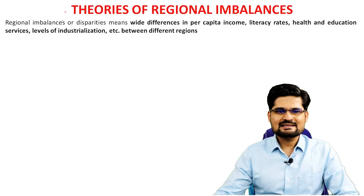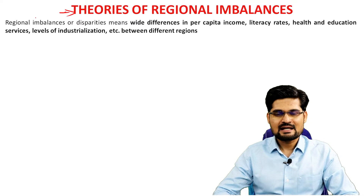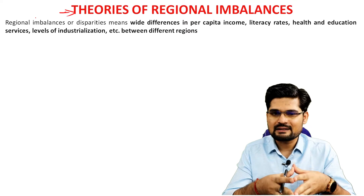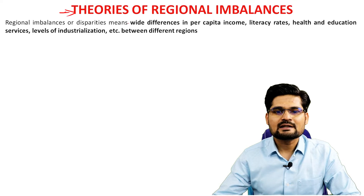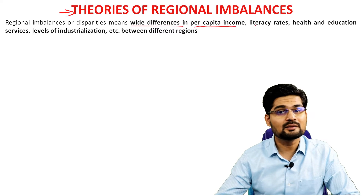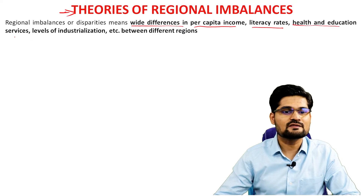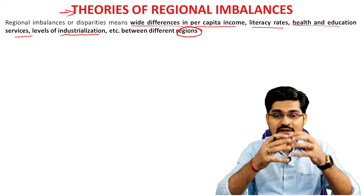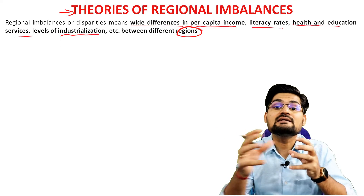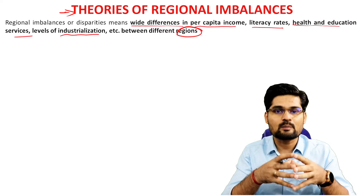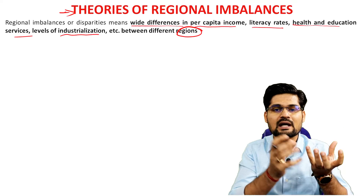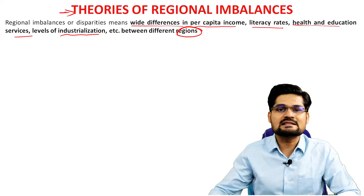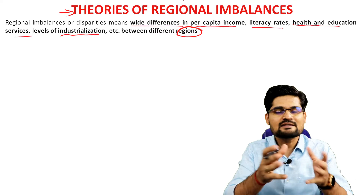Let's discuss the various theories of regional imbalances. Whenever we say regional imbalance, it's important to understand what constitutes it. It simply means wide differences in per capita income, literacy rates, health and education services, levels of industrialization — not just within a single region but within as well as between regions. One region is highly developed and another is not, with lower levels of development and per capita income.